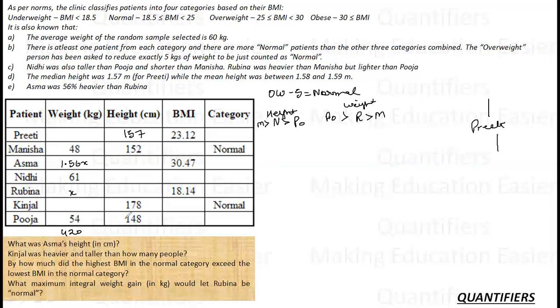Let me start filling the values. Manisha's BMI would be 48 upon 152 square. You have the provision to use calculator. I will recommend you to use calculator. If you have to use approximation, you should be very good with the Vedic. For example, how to interpret 152 square: 100 plus 52 square. 52 square is 2704, then 27, 152 and 152 is 204. So 27, 24, 23104.